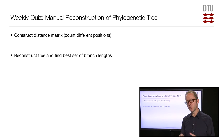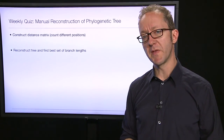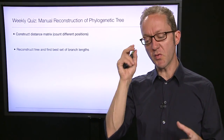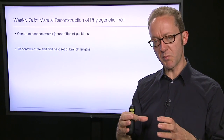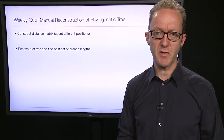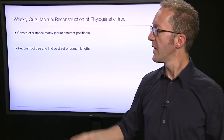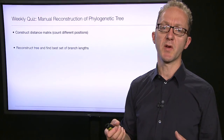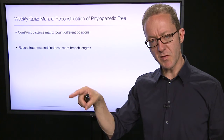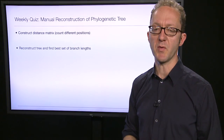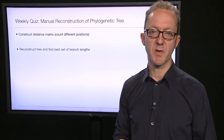At this point, you should take the next weekly quiz for this week and try to solve it. In this quiz, you will get the opportunity to manually do a distance-based analysis. You're given an alignment, and from that alignment you should first construct a distance matrix by counting the pairwise distances — the number of mutations separating each pair of sequences. Then, from that distance matrix, construct a phylogenetic tree such that the branch lengths correspond to the ones in your distance matrix. Once you've done that, please come back and continue, and we'll talk more about distance-based methods.